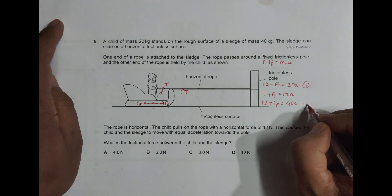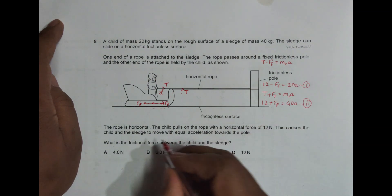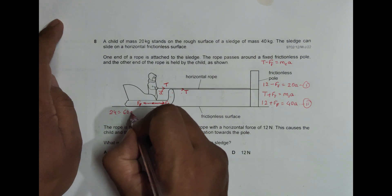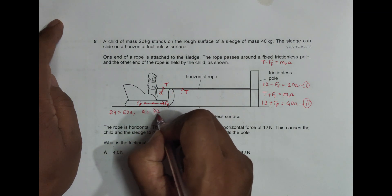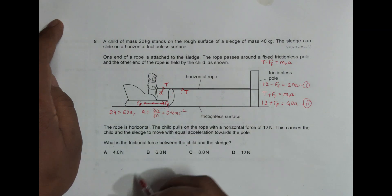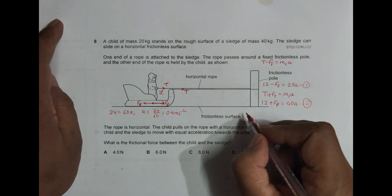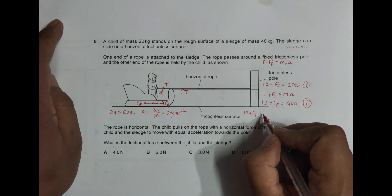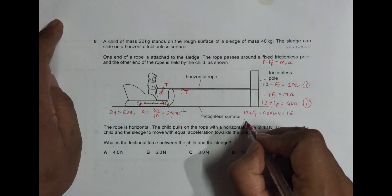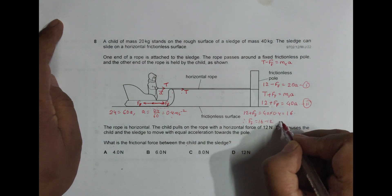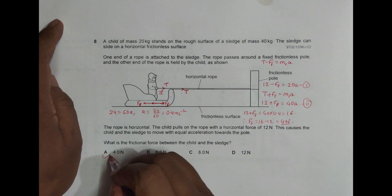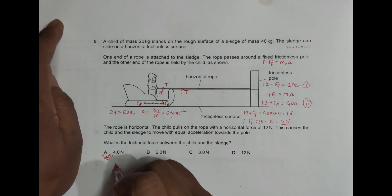We now have two equations: 12 - f = 20a and 12 + f = 40a. Adding them gives 24 = 60a, so a = 24/60 = 0.4 m/s². Substituting back: 12 + f = 40 × 0.4 = 16, therefore f = 16 - 12 = 4 newtons. The answer is 4 N, which corresponds to choice A.